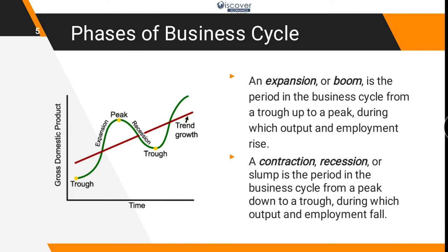During a boom, businesses are going to offer more jobs and increase their outputs. Recession and contraction is the period in the business cycle from a peak down to a drop during which output and employment fall. This is the time period when employment and output will fall because economic activity is passive — businesses are not earning a lot. So they will have to reduce their productivity, and they may go for downsizing or have sluggish activity.